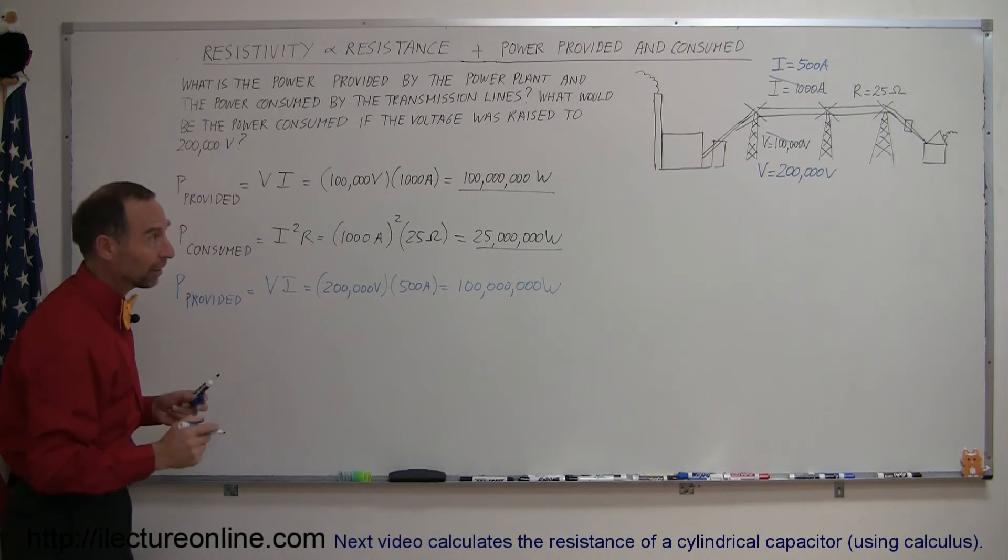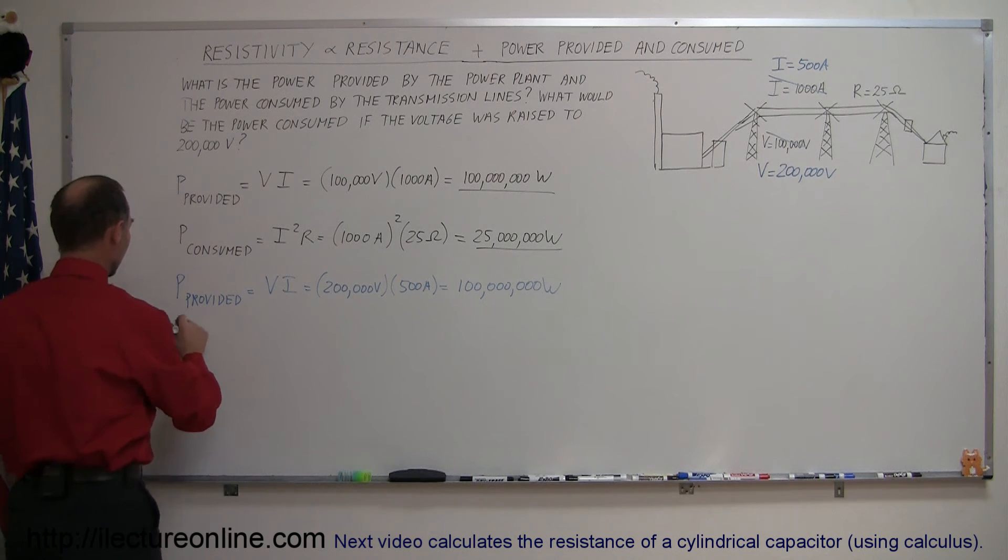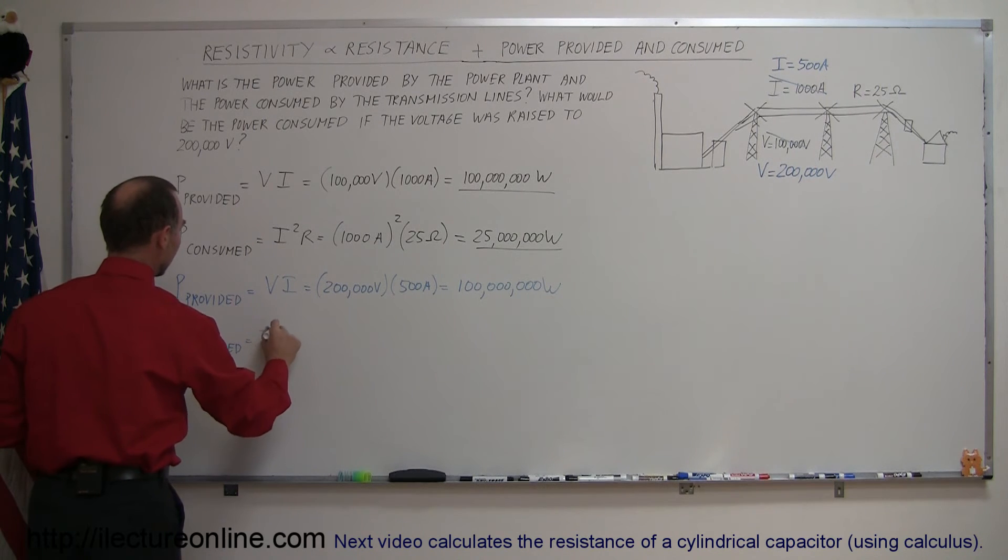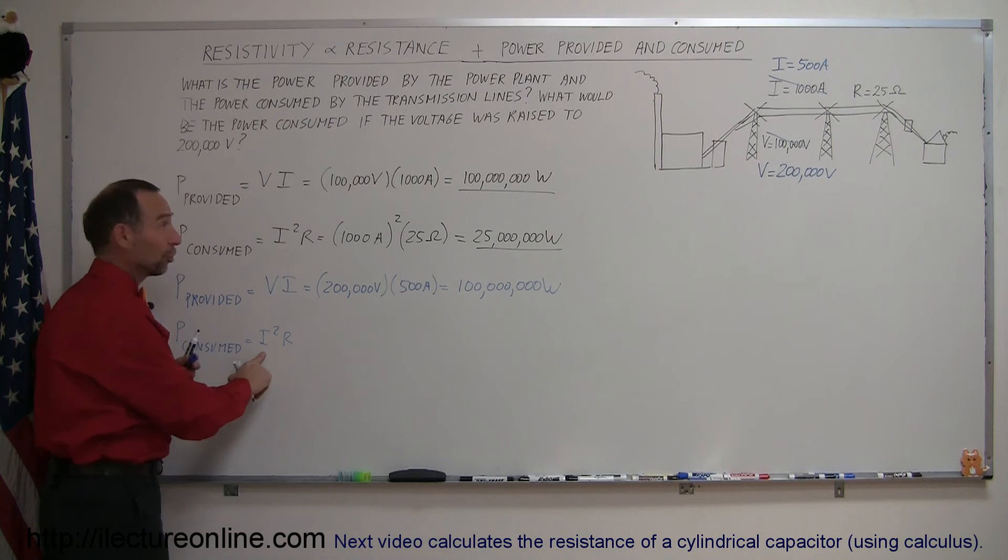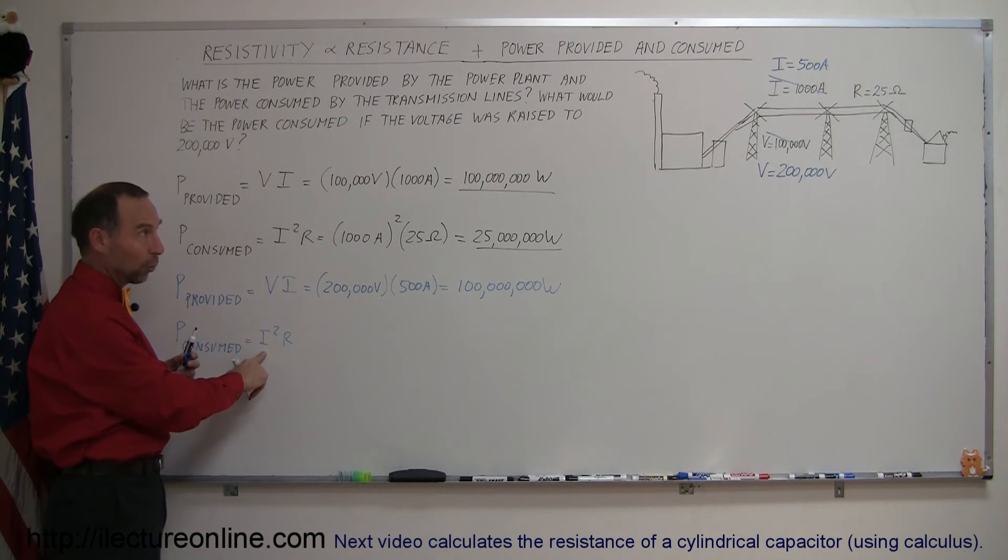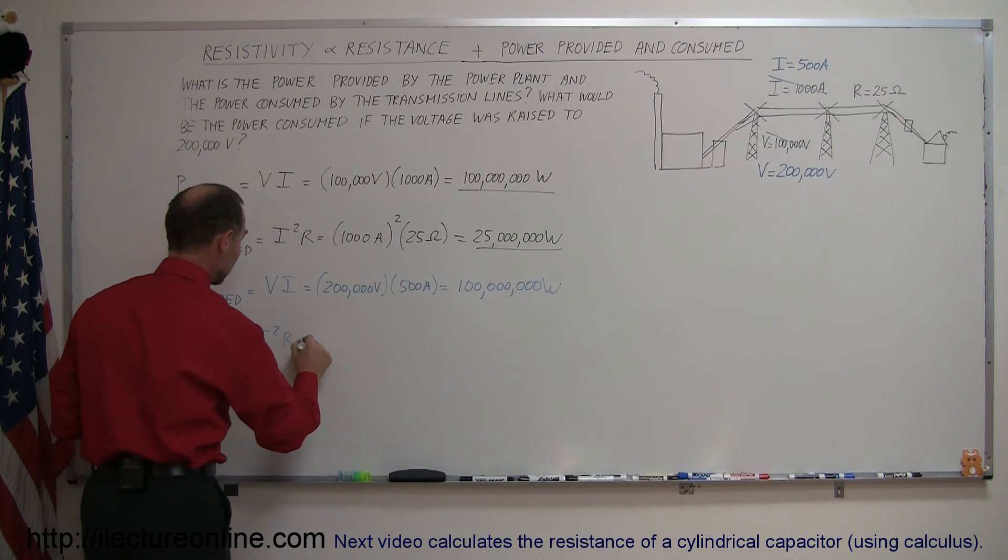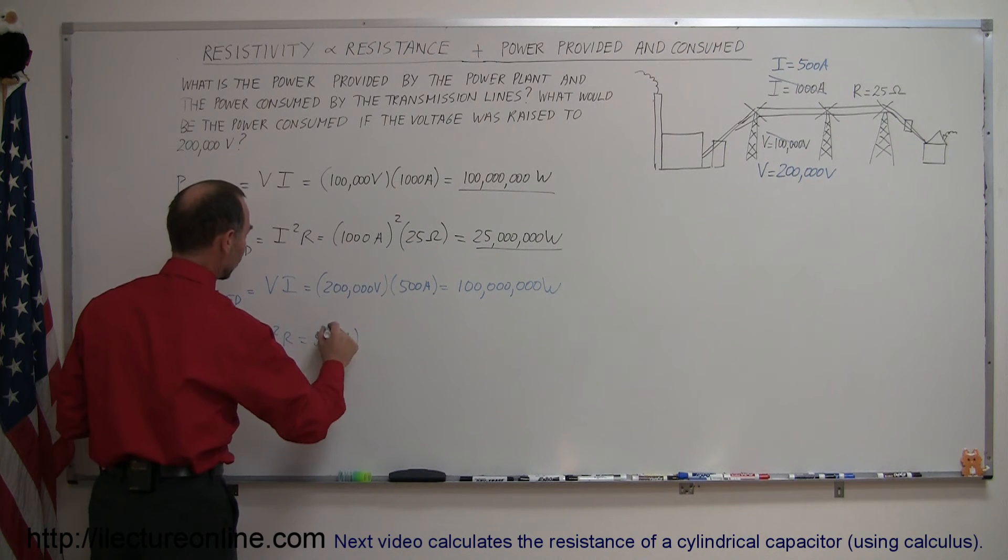But do the transmission lines now consume less? Let's find out. So P consumed is equal to I squared R, and so you can see that the important term here is that the current is squared, and if we can reduce the current, since it's squared you'll take less power to transmit the current. So that would now be 500 amps squared.